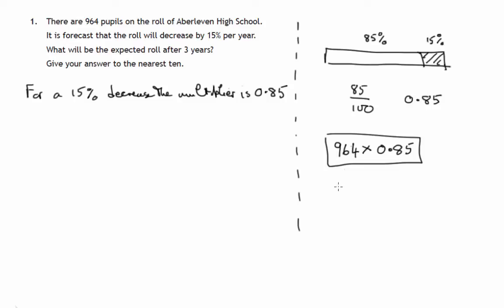After another year, we'll have 85% of this calculation. So we're really multiplying by 0.85 three times.